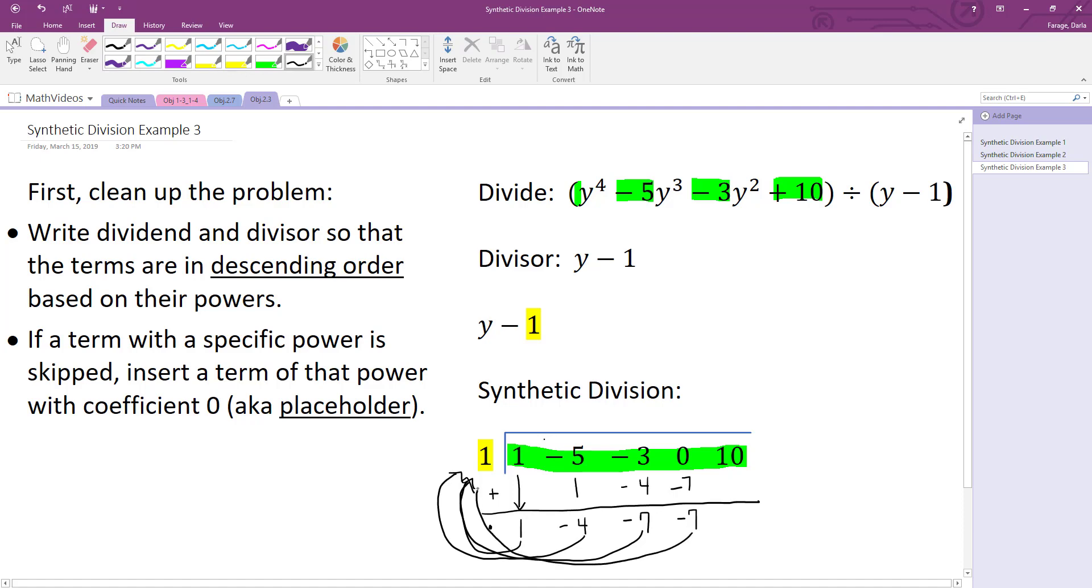Take the negative 7 and multiply it by my 1, we get negative 7. Combine that with 10. The result is a positive 3, which is our remainder. And note that again this was y minus 1.